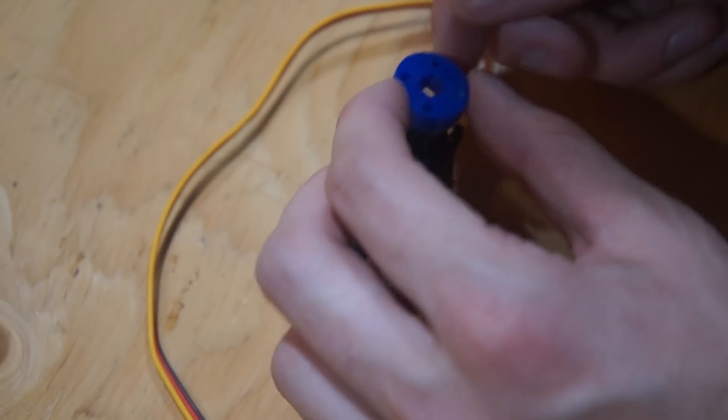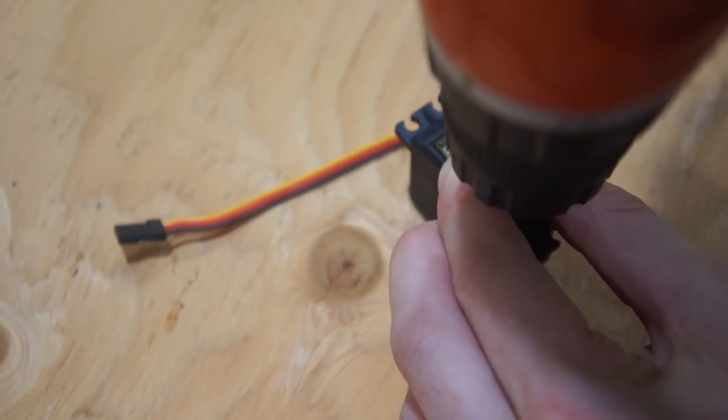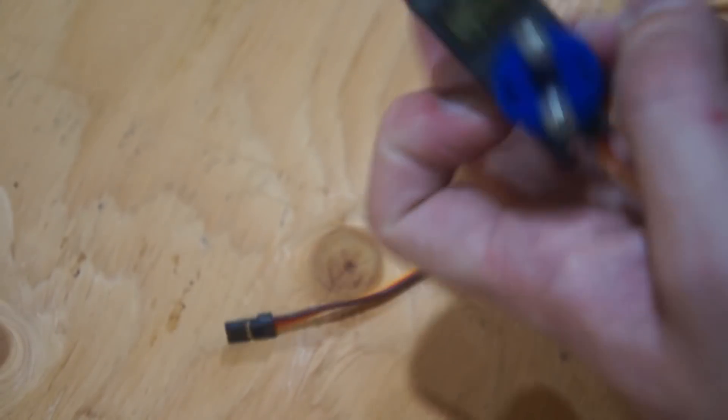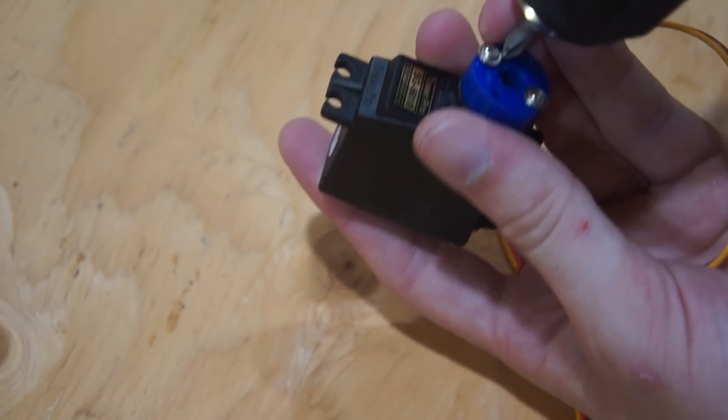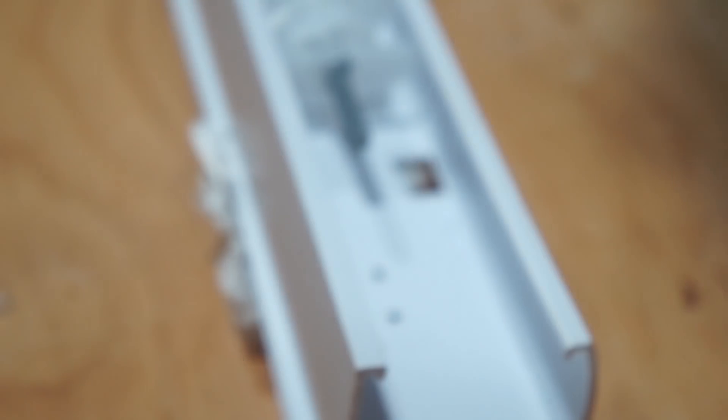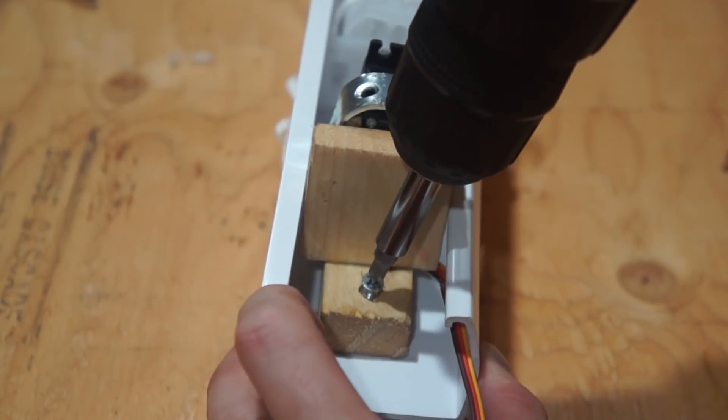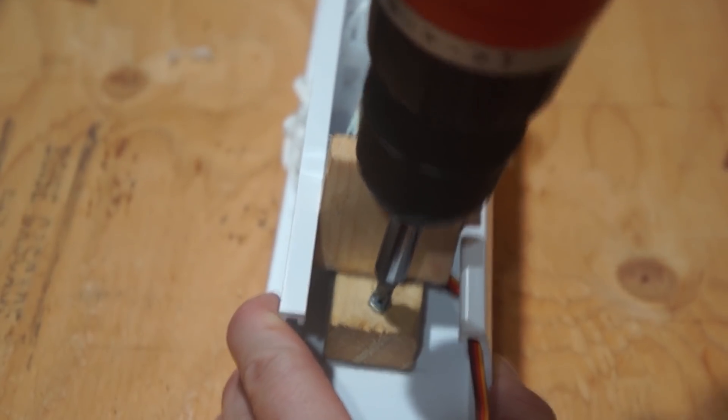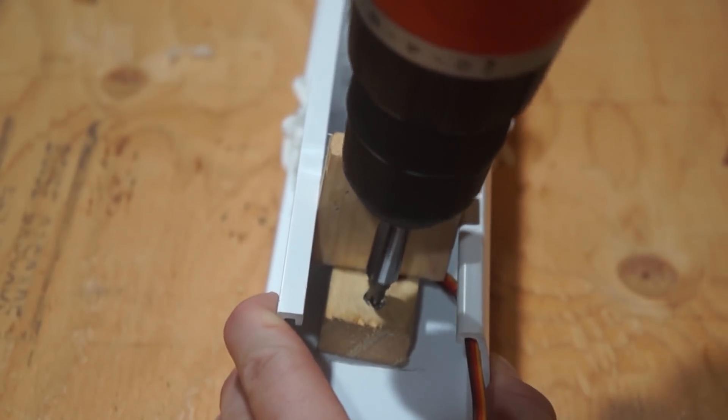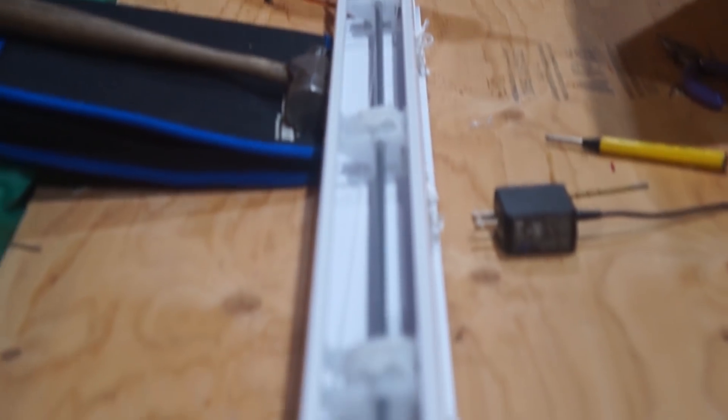So now we're going to fit it right here to the servo mount and screw it in to secure it. Okay, so now this is an enclosure that I made for it so that when we connect it, it doesn't move around in the blinds housing. And now I'm going to add a screw on the back to keep it from moving backwards.